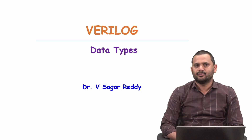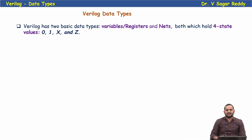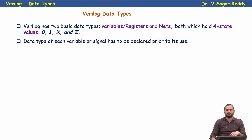Hello everyone. In this video we will discuss various data types in Verilog. Verilog has two basic data types: variable type and net type, both of which hold four-state values: 0, 1, x, and z. Each data type must be declared before using it, so the data type of each variable or signal has to be declared prior to its use.